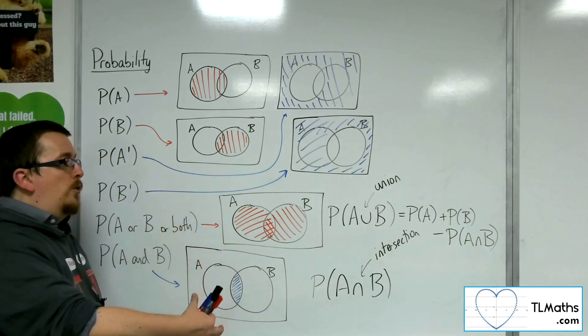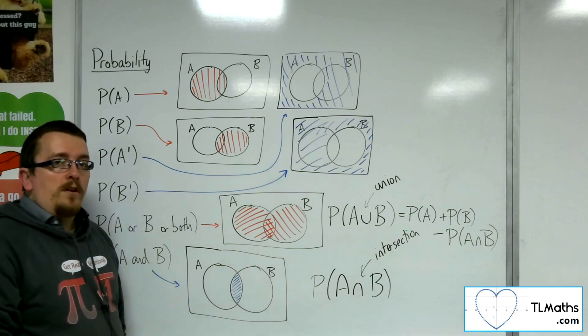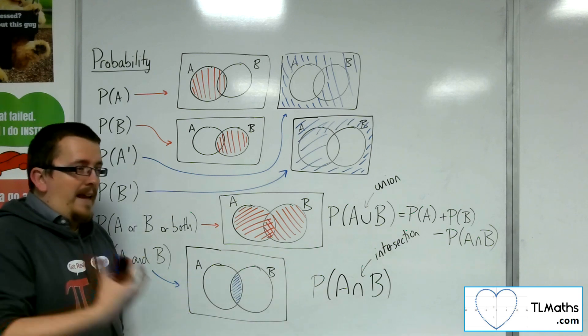And we also understand what that intersection now means. So this is how we can bring Venn diagrams and this new notation of probabilities into the fray.